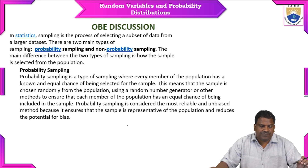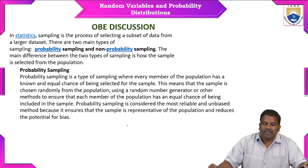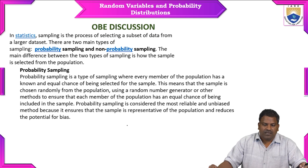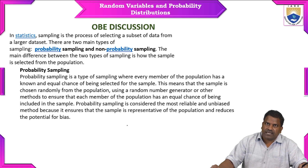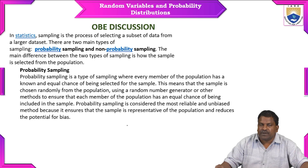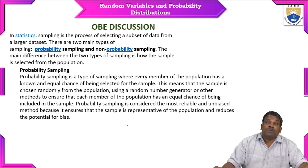Probability sampling is considered the most reliable and unbiased method because it ensures that the sample is representative of the population and reduces the potential for bias — meaning ambiguity. That doubt — either this or that — should not arise. It should be clear. That's why to avoid bias, proper sampling is needed. In statistics, sampling is the process of selecting a subset of data from a larger dataset.